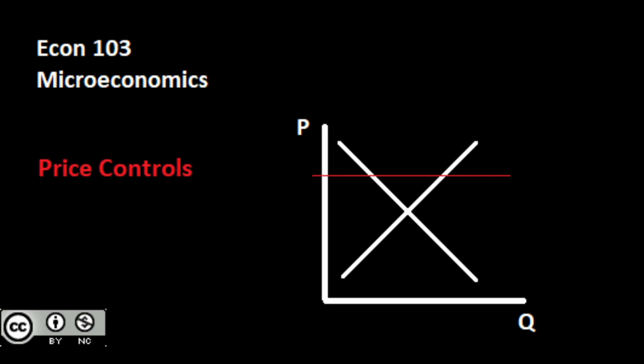These price controls are bad if the initial assumptions are met — that we have lots of small suppliers and lots of small consumers. If that's not met and the market isn't able to be allocatively efficient on its own, sometimes we can make a case for price controls. There's a Murphy's Law of Economic Policy, often credited to Alan Blinder: economists have the least influence on policy where they know the most and are the most agreed, and the most influence where they know the least and disagree the most vehemently.